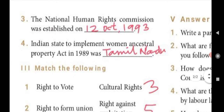Third: The National Human Rights Commission was established on 12th October 1993. Fourth: The first Indian state to implement the Women's Ancestral Property Act in 1989 was — Tamil Nadu.